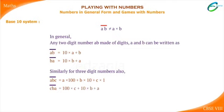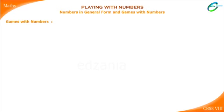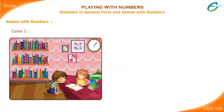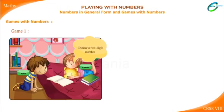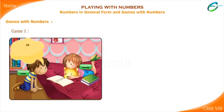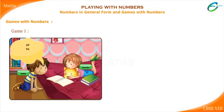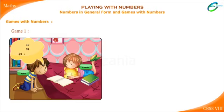More games with numbers. Just like Manoj, Anusha and Rohit also like to play with numbers. Anusha: Choose a two-digit number but do not tell me. Rohit: All right — forty-nine. Anusha: Reverse the digits to get the new number. Rohit: Ninety-four. Anusha: Add this to the number you started with. Rohit: Forty-nine plus ninety-four equals one hundred and forty-three.